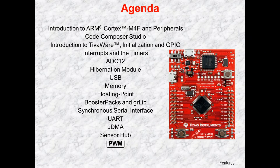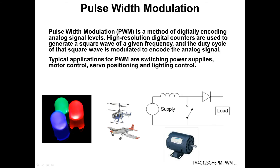In this chapter, we'll take a look at the PWM module on the TM4C123GH6PM. Pulse Width Modulation, or PWM, is a widely used technique to digitally encode analog levels. High-resolution counters are used to generate a square wave of a given frequency, and the duty cycle of that wave is then modulated to encode the analog signal. PWM is typically found in motor control, servo positioning, lighting, and switching power supply applications.